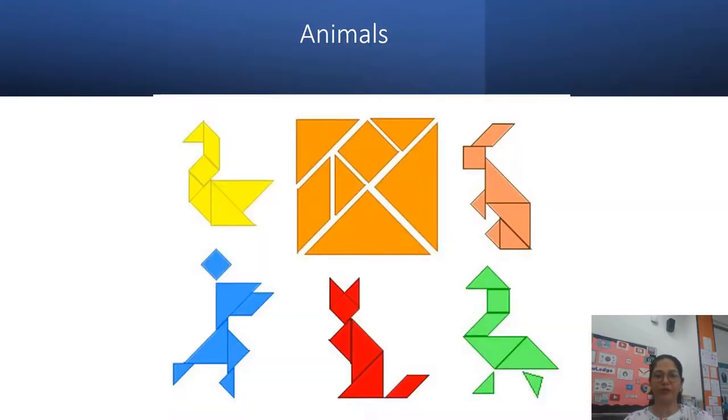Moving further, we can create a huge array of animals using these tangrams and students love making these. In the free time, in the activity time, it can be used along with the shapes task. So there are several topics in which we can use tangrams: animals like swan, a rabbit, a monkey, cat and a duck.